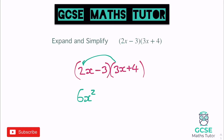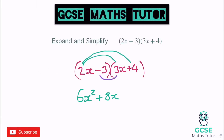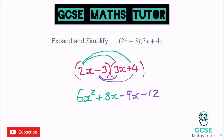Then 2x times 4 — 2 times 4 is 8 — so plus 8x. On to the underneath, just like before: negative 3 times 3x is negative 9x, and negative 3 times 4 is negative 12. We still have 6x squared. Tidying up the two middle ones: 8 take away 9 is just 1, but we don't write 1x — we just write minus x, which means minus 1x. And then minus 12. That's your double bracket expanded.